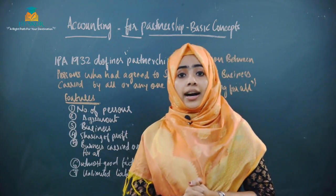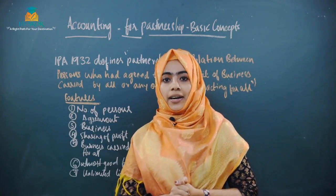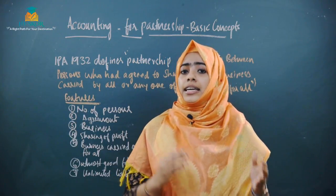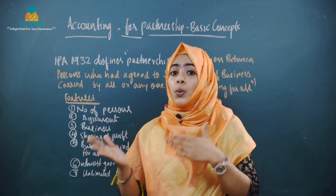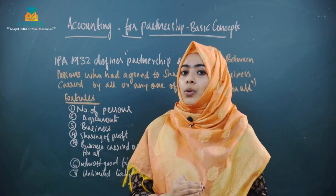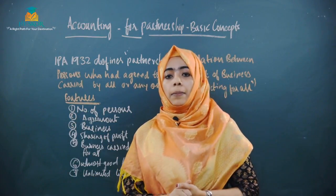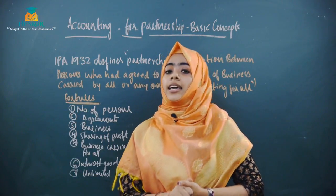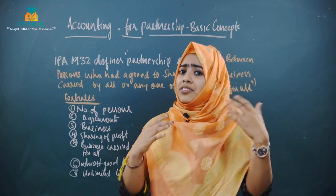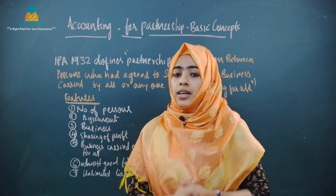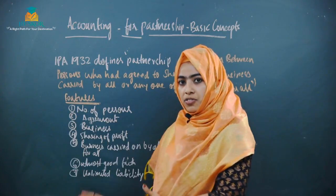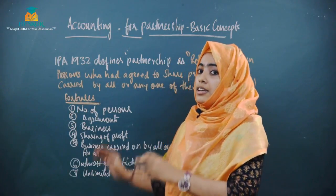In simple terms, partnership means when two or more persons come together, form an agreement, and carry on a business — that is what we call partnership. Now, what are the features of partnership? There are seven features in total, five of which you can get from the definition itself.